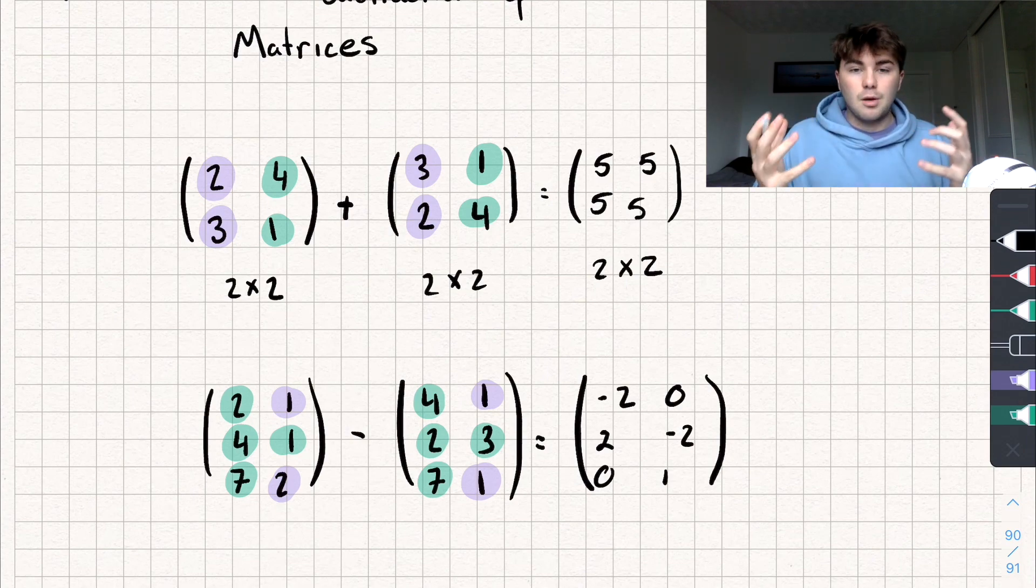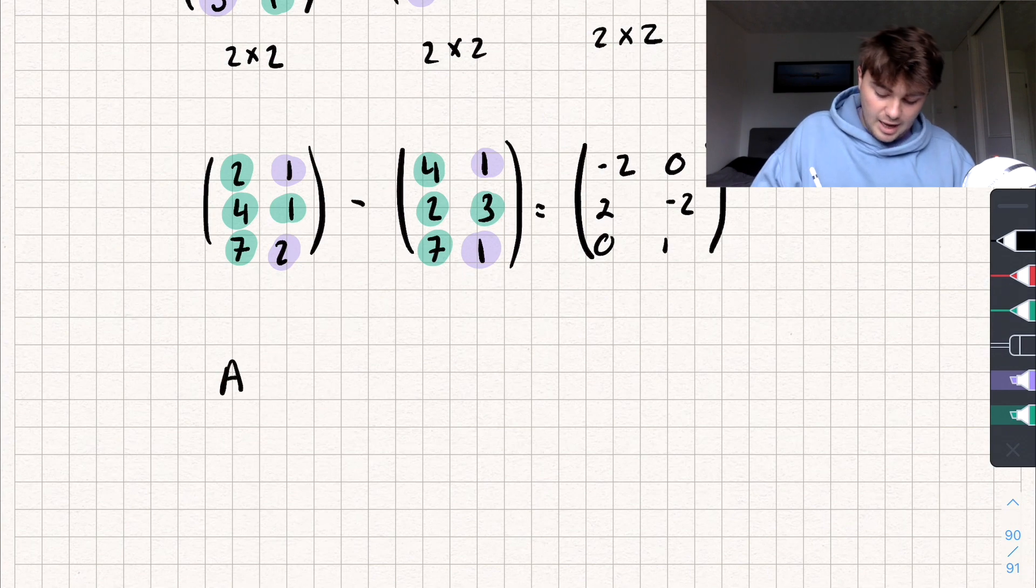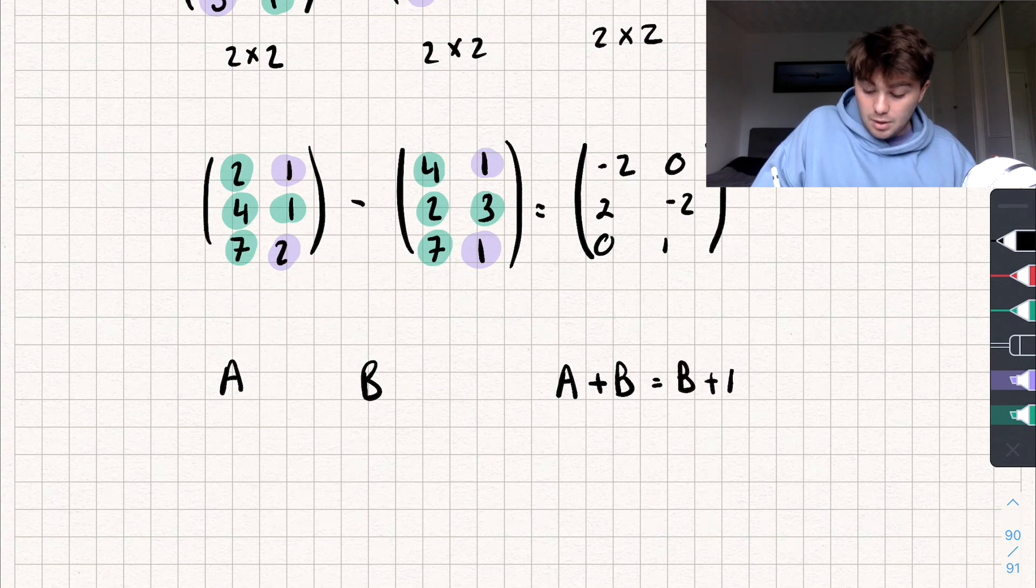So for it to be commutative, it means it doesn't matter the order in which I add my matrices. So say I have a matrix A and another matrix B. Matrix A plus matrix B is equal to matrix B plus matrix A. That's what it means when I say commutative.